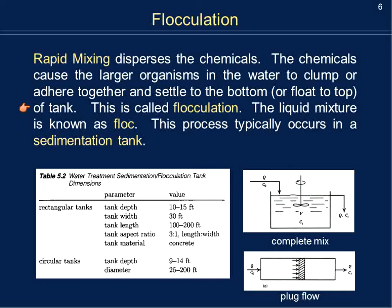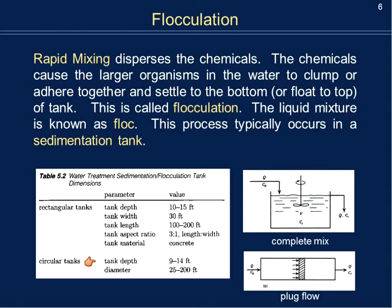Some typical recommended dimensions for a flocculation tank — whether rectangular or circular — depend on the ratios we're looking to obtain. Recommended values for depth, width, and length are given in your textbook as Table 5.2, including the aspect ratio between length and width. Tank material is typically concrete, and you'll see examples of this on your field trip.